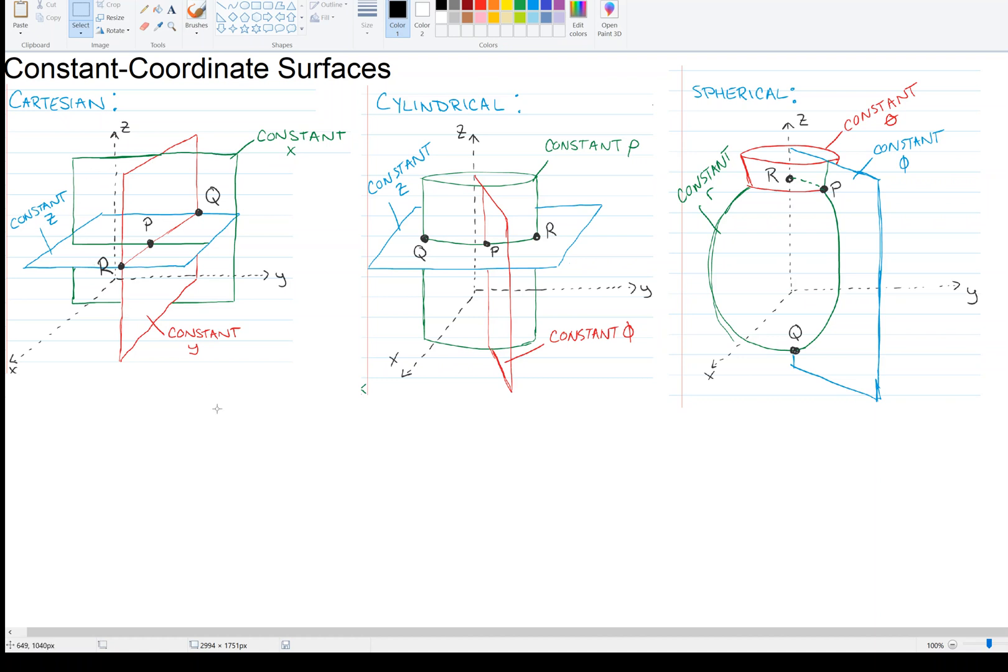You can repeat this for a constant y. If we held y fixed, it's left or right, maybe right two units. So all of these points on the red plane have the property that they're to the right by two units, but then x and z can vary. So it makes this plane in red. And you can repeat this for z, which makes this plane in blue.